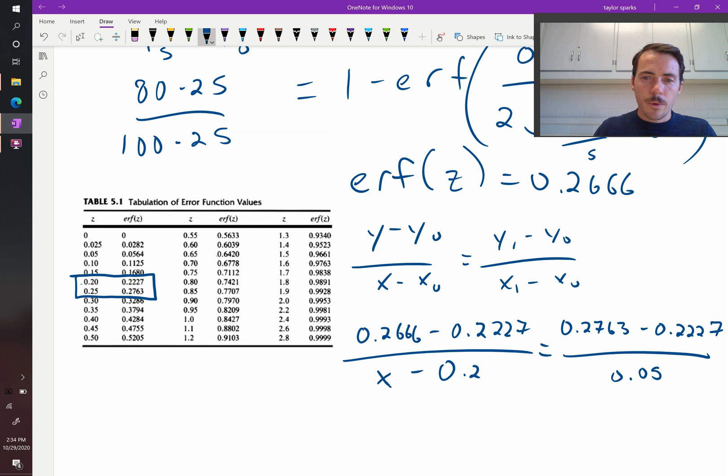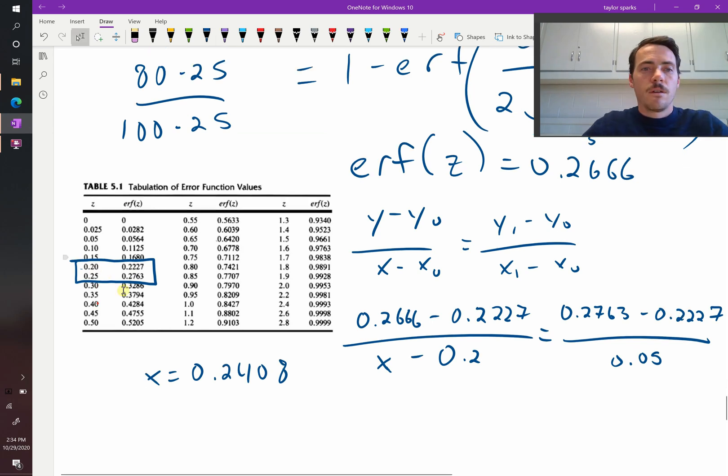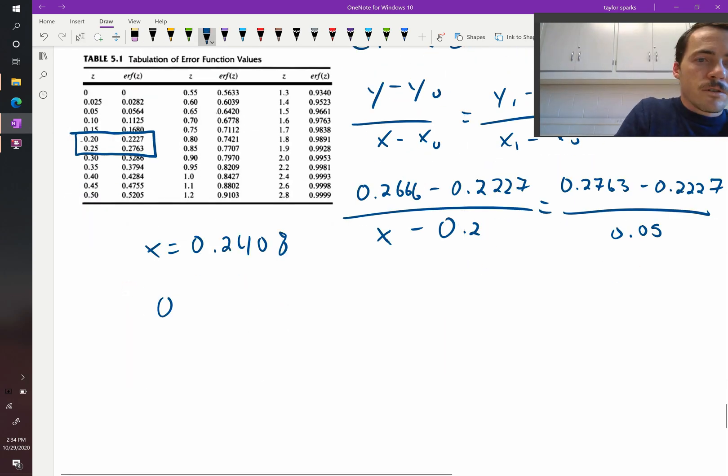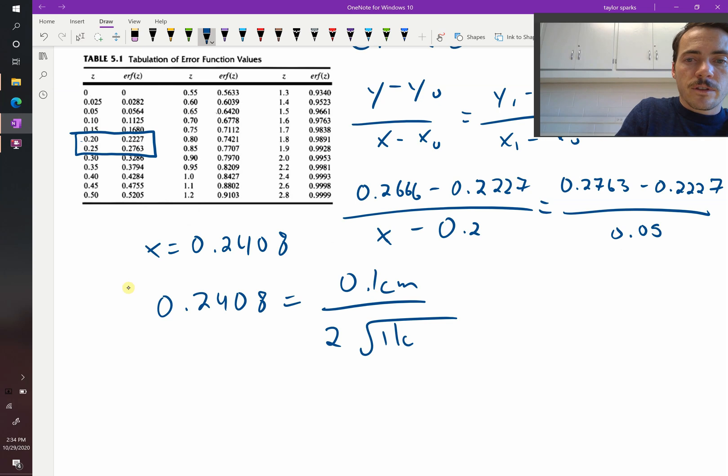Okay, so we could solve for X here, and we find that X is equal to 0.2408. X is Z, so 0.2408 is equal to 0.1 centimeter divided by 2 times the square root of 11 centimeters squared per second times T.